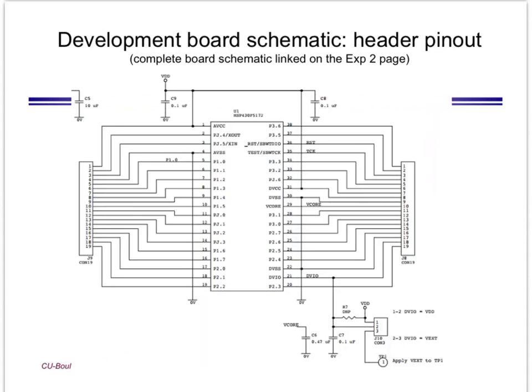One point to note is that there are several ground pins. There is an analog ground at pin 4, which we will use as a reference when measuring with scope voltage probes at other pins. There are two digital grounds at pin 22 and pin 30. On the board, both digital and analog grounds are tied together to the ground of the complete board.